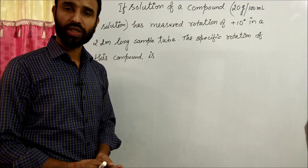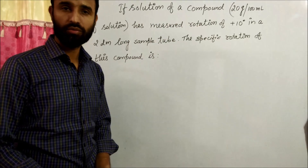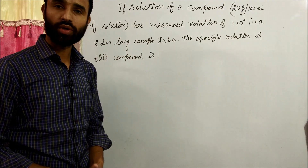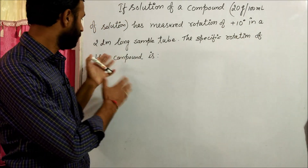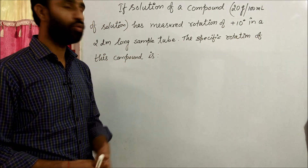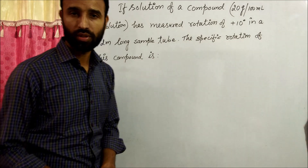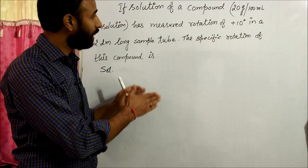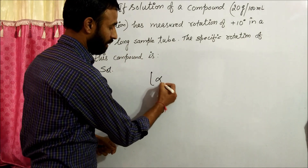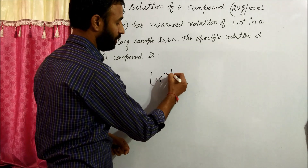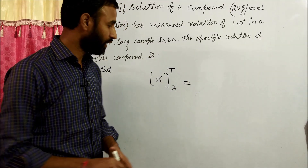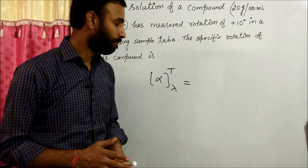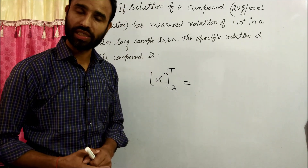Here is a question on specific rotation. If a solution of a compound — 20 grams per 100 ml of solution — has a measured rotation of plus 10 degrees in a 2 decimeter long sample tube, what is the specific rotation of the compound? Since lambda and temperature are not mentioned, they are considered fixed at standard conditions: D line of sodium at 589.6 nm and 25 degrees Celsius.